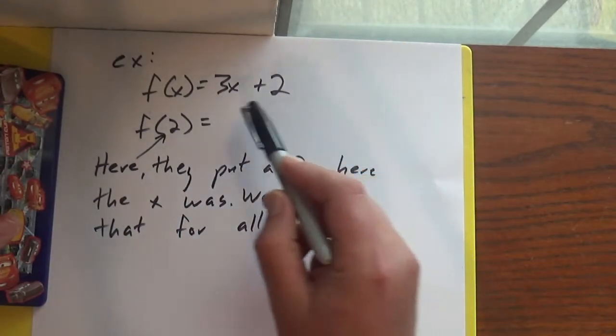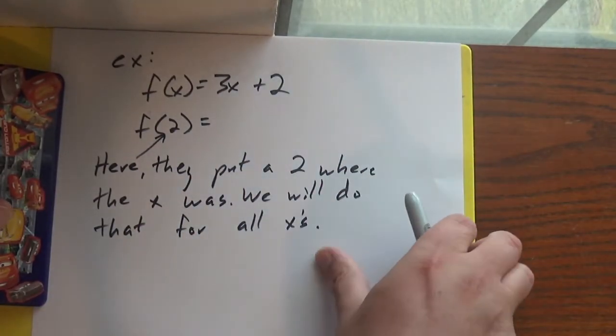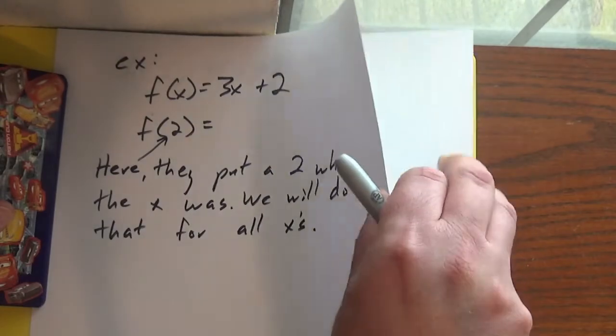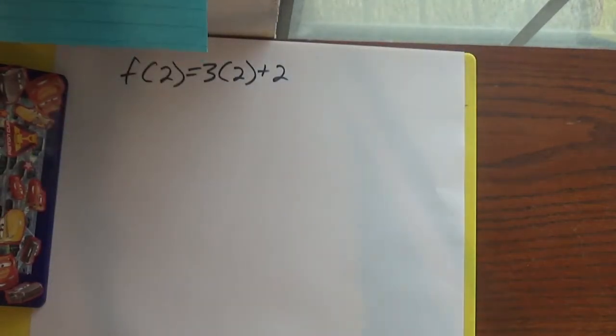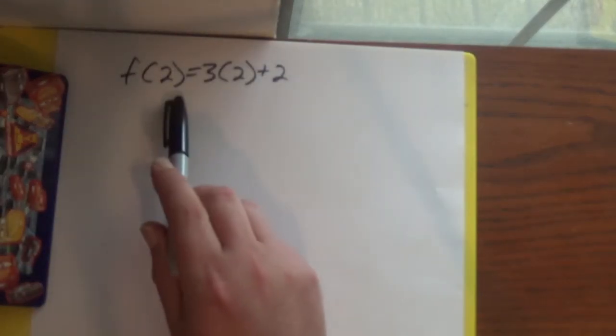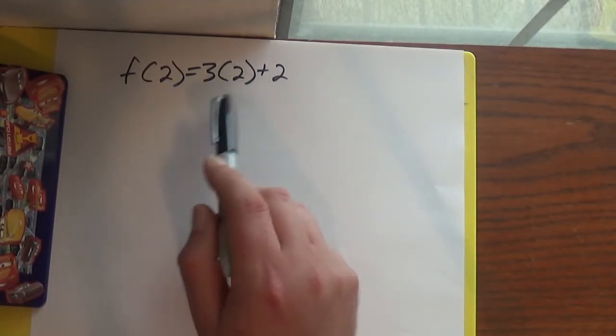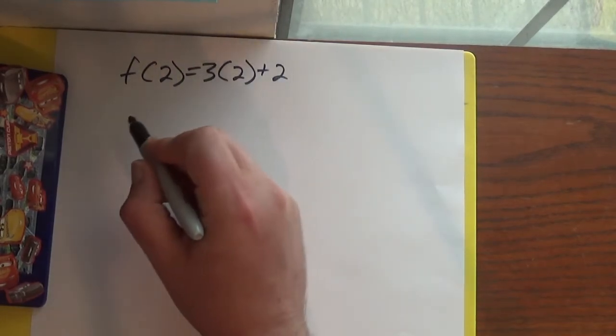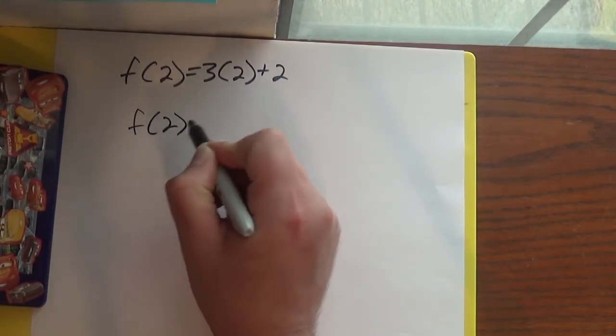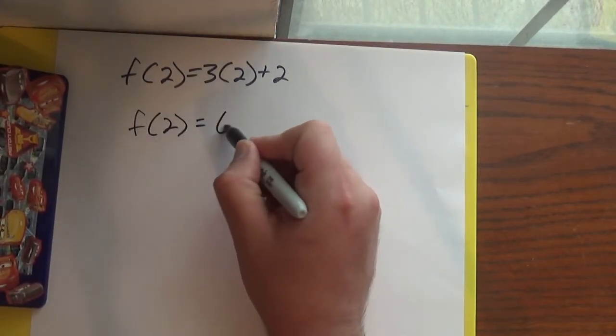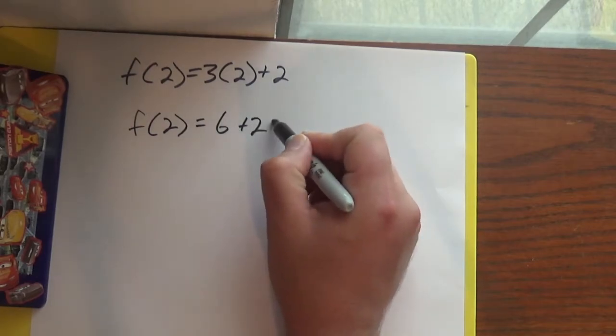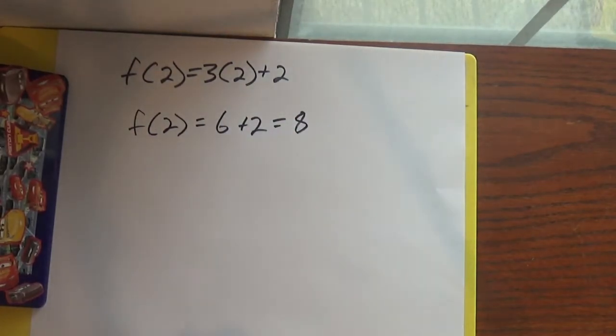If we have lots of x's in here, we'd put a 2 in each of those spots. So for us to figure out what f(2) is, we just put a 2 right there and then we multiply it out. So f(2) = 3 times 2 is 6 plus 2. So it's 8. And there you go.